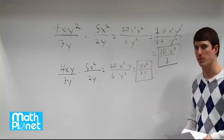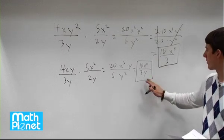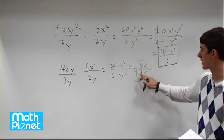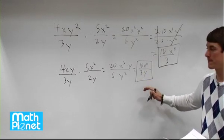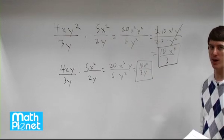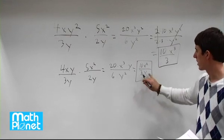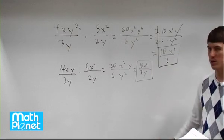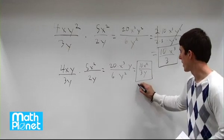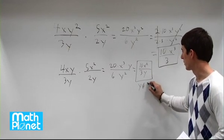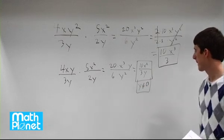And again any time you have a variable in the bottom you have to be careful for forbidden values. So anything that will make this denominator 0 makes this rational expression undefined and therefore doesn't make any sense. So we need to say what values make the denominator 0? Well we have to say y does not equal 0. And that's it.